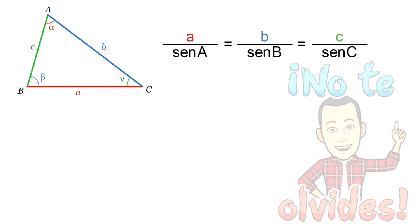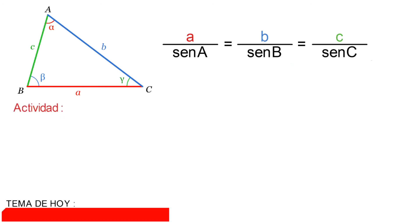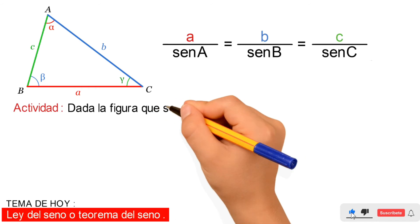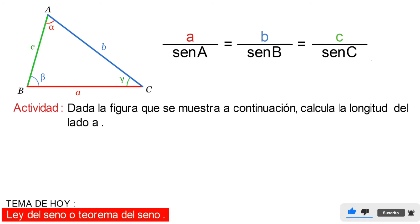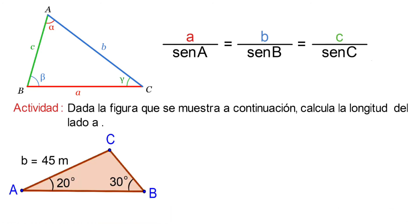A continuación veamos una actividad. Dada la figura que se muestra a continuación, calcula la longitud del lado a. Tenemos el triángulo ABC donde se muestran los datos de tres elementos de este.